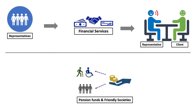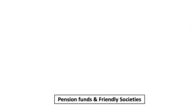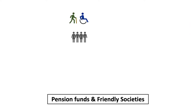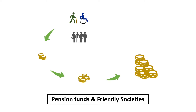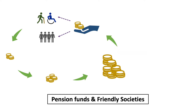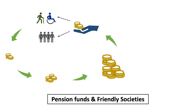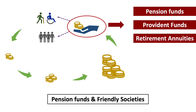Next, we have pension funds and friendly societies as financial products. A pension fund is a fund set up to cater for employees when they reach their retirement age. A client contributes towards this fund via their employer through salary deductions, and when the client retires, they can access the money saved as their retirement income. Types of retirement funds include pension funds, provident funds and retirement annuities (RAs). A friendly society — also commonly known as a burial society — is like a stokveld with its operations managed by a board of trustees.